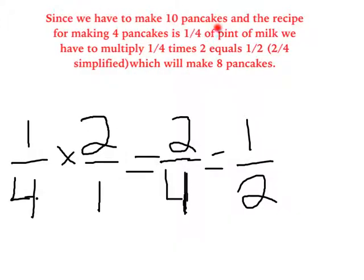Since we have to make 10 pancakes and the recipe for making 4 pancakes is 1/4 a pint of milk, we have to multiply 1/4 times 2 which equals 1/2 and 2/4 simplified which will make 8 pancakes. 1/4 times 2/1 which equals 2/4 simplified equals 1/2.